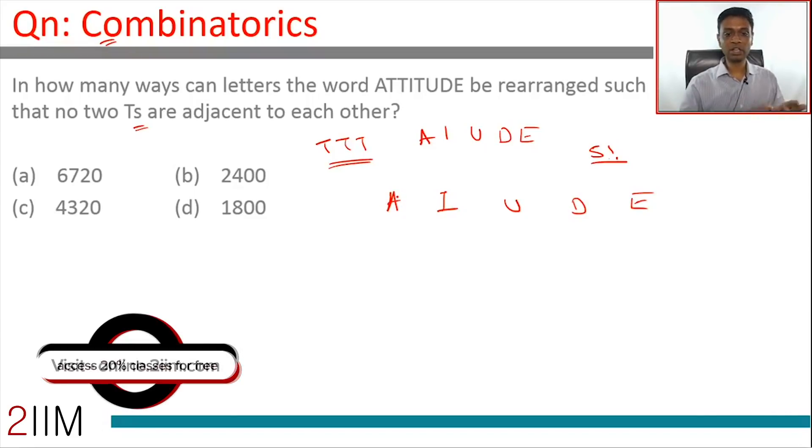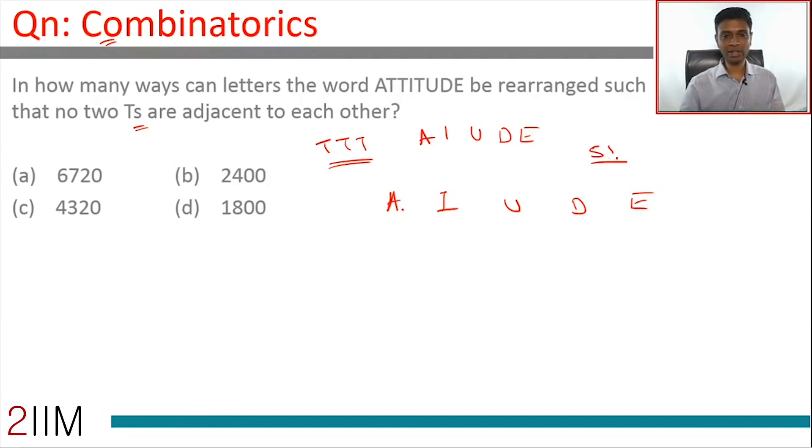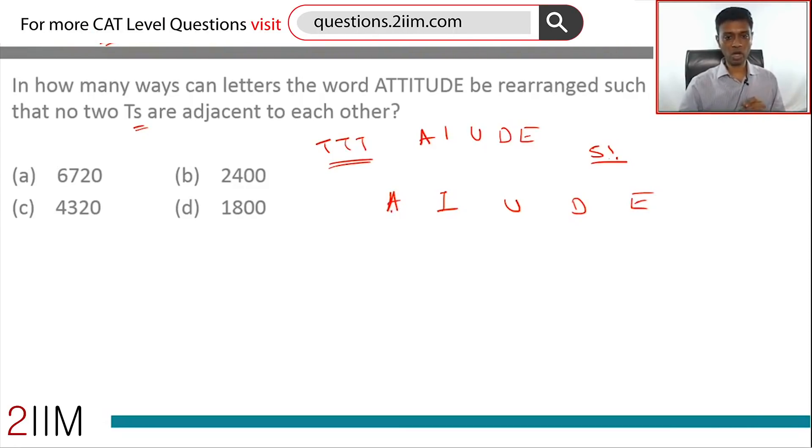Now, no two T's should be adjacent to each other, so we should create a framework where T's cannot be adjacent to each other but can be between any two letters. Think about this: if we created one slot here...